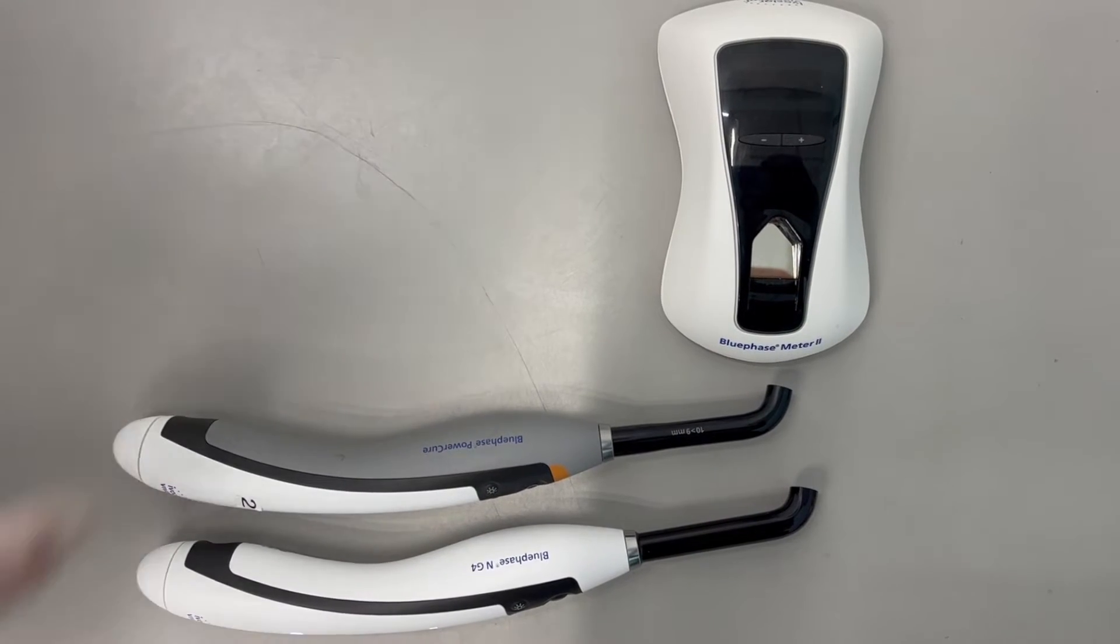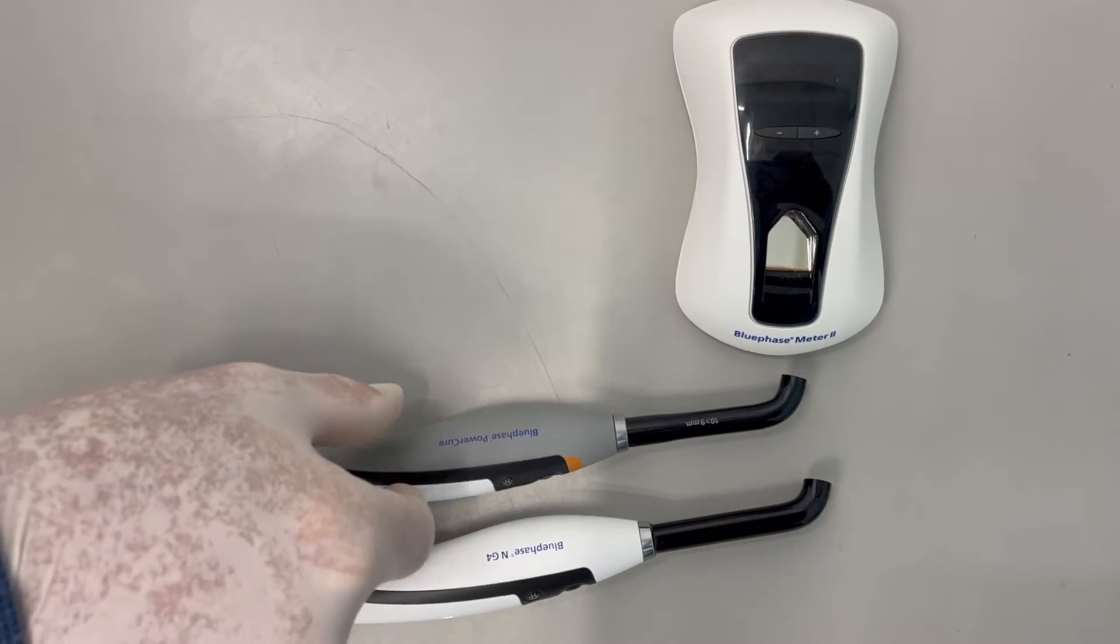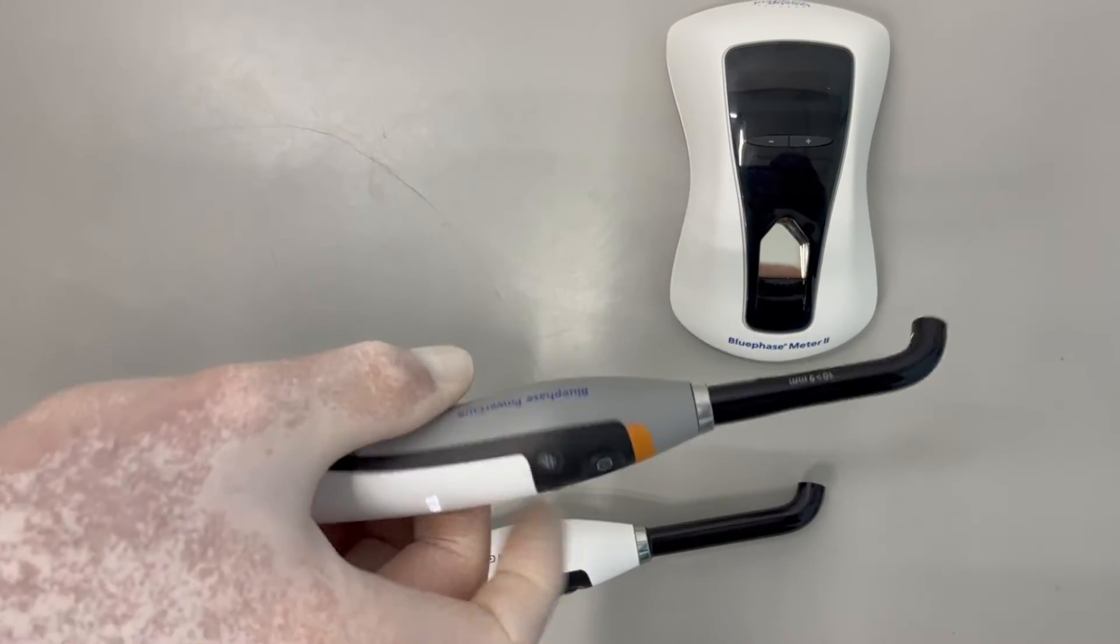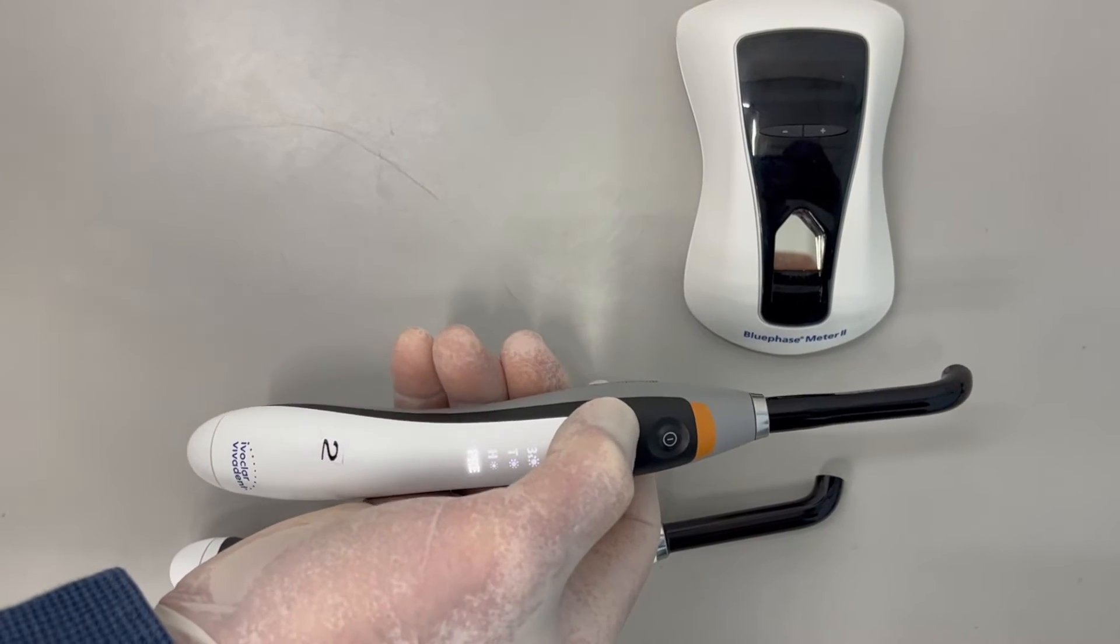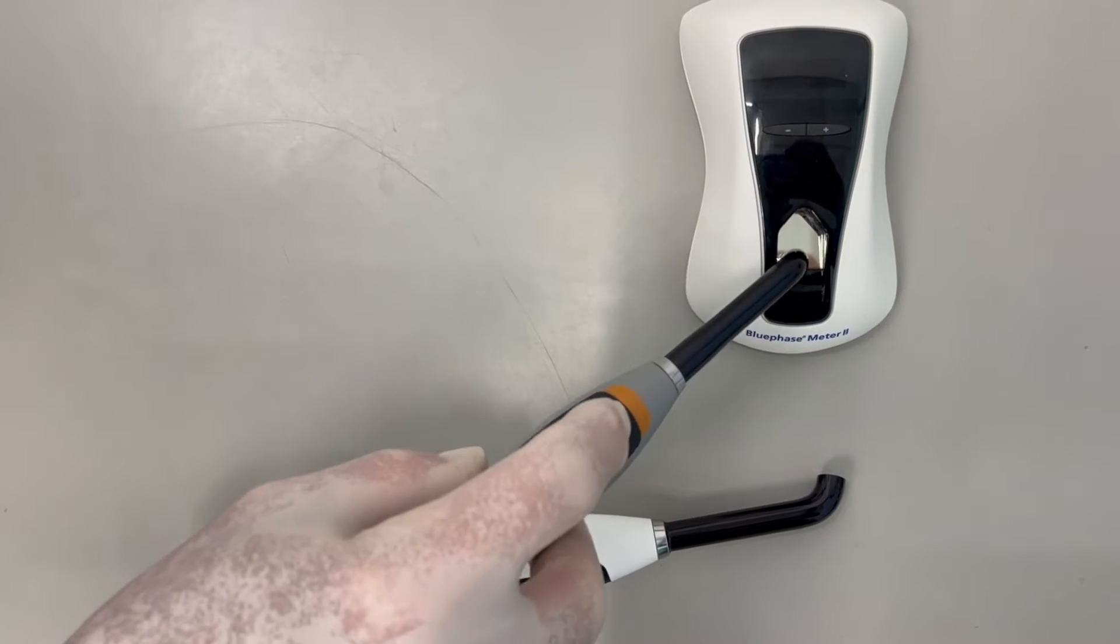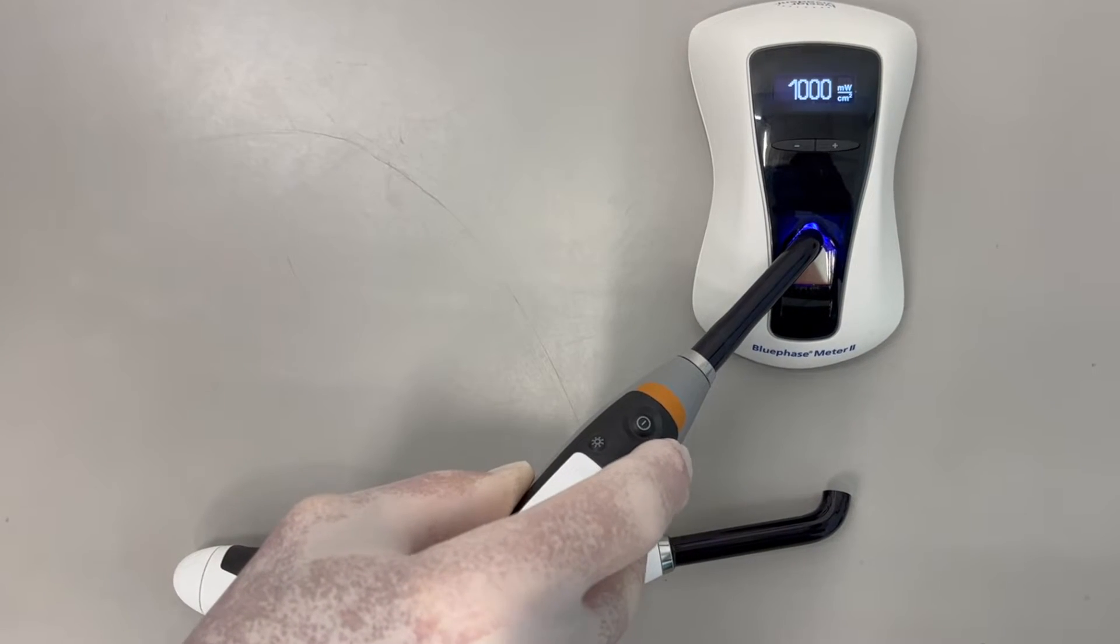Here we see the lights being used on the Blufase Meter 2. First, we set the tip diameter to 9mm and the light to the high power setting. The irradiance is 1000 milliwatts per centimeter squared.